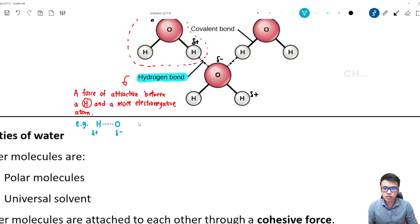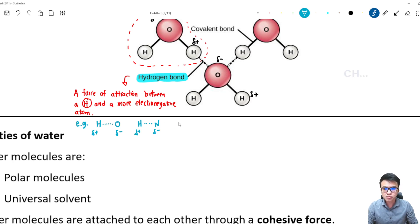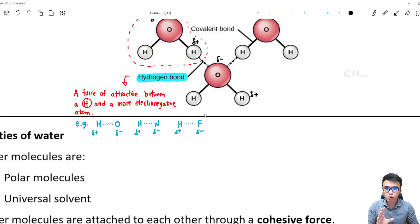The next one is hydrogen forming a bond with nitrogen. Hydrogen is partially positive and nitrogen is partially negative, so the bond is a hydrogen bond. Hydrogen can also form a bond with F, the fluorine. Hydrogen is partially positive and fluorine is partially negative, so the bond in the middle is a hydrogen bond. So any atom with a slightly negative charge forming a bond together with hydrogen — we call it a hydrogen bond.